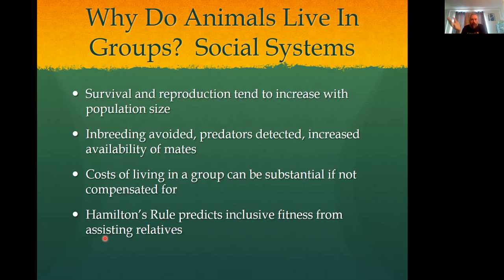Why animals do all this comes down to cost-benefit relationships. Survival and reproduction both tend to get easier if there are more individuals — more mates, less likelihood of mating with a cousin so we avoid inbreeding, and if there are a hundred pairs of eyes you're more likely to find a predator. However, these benefits are often compensated for by things like increased risk of disease and increased competition for resources.